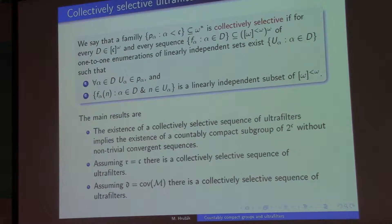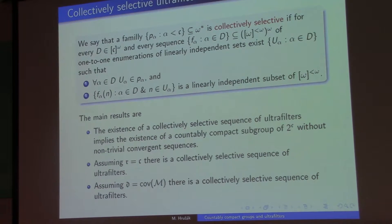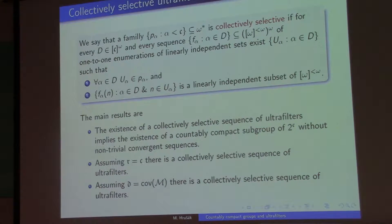Well, and it's not surprising that if I have that, then I can define my splitting homomorphisms, and then I can extend them to the whole group, and that actually gives me what I need. So in particular, the existence of a collectively selective sequence of ultrafilter gives me the existence of a countably compact subgroup of 2-to-the-c without nontrivial convergent sequences. So now the question becomes, when can I construct this collectively selective sequence of ultrafilters?